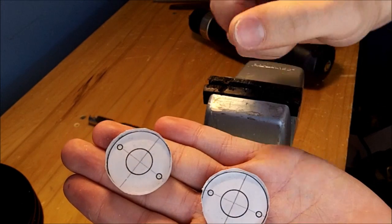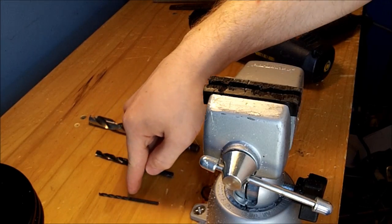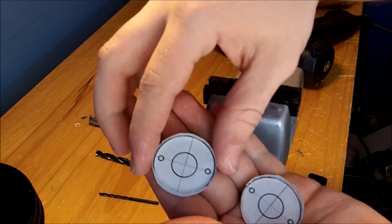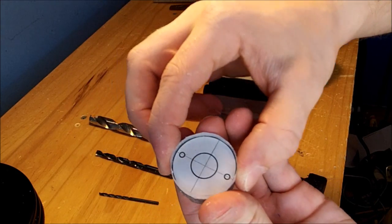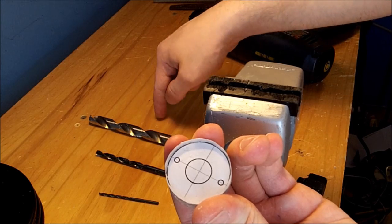Holes now need to be drilled into these two plates. For the outside holes, we're going to use a 7/64ths drill bit. And then for the inside, we're going to step drill using 7/64ths, quarter inch drill bit and half inch drill bit.